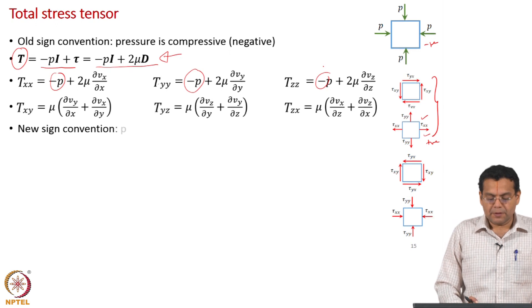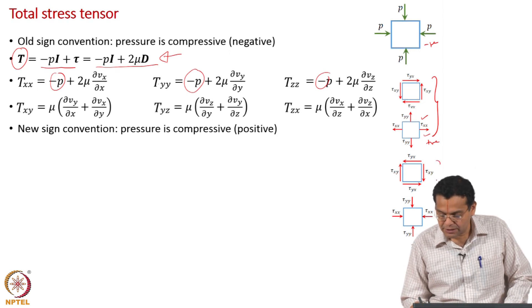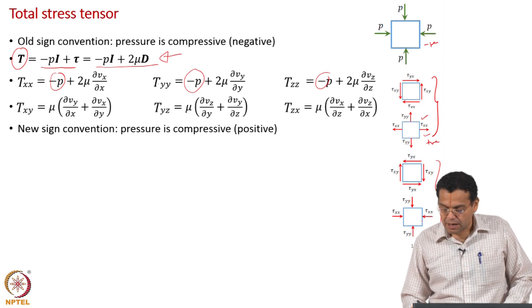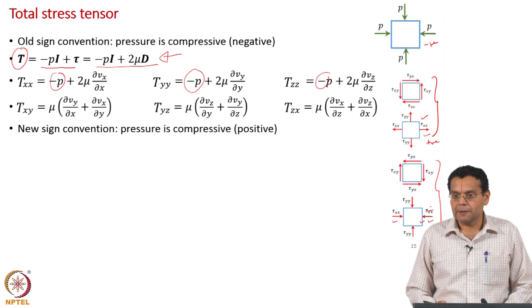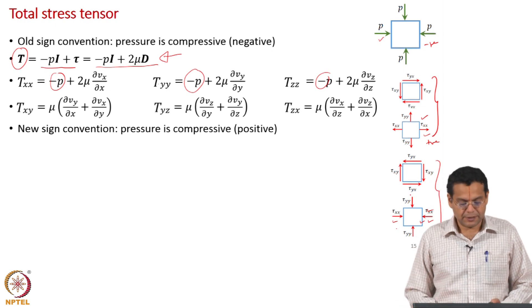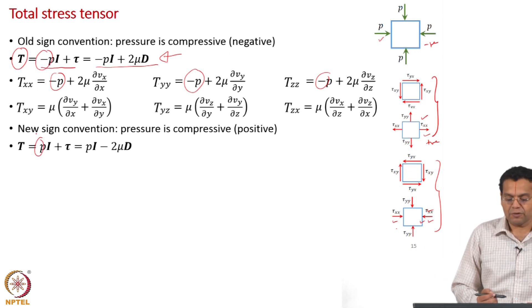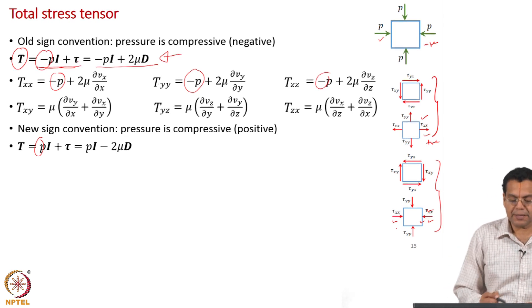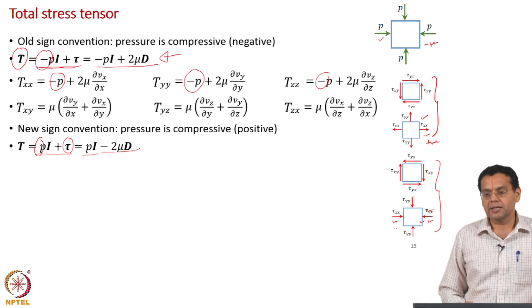For the new sign convention, pressure is again compressive — that cannot change — but now it becomes positive. These two figures are shown based on the new sign convention. On a positive face, forces are along the negative direction; the arrows represent compressive forces and they represent a positive stress tensor component. So the pressure, which is compressive, becomes positive in the new sign convention. The total stress tensor changes from minus p I plus tau to plus p I plus tau, where tau equals minus 2 mu d.